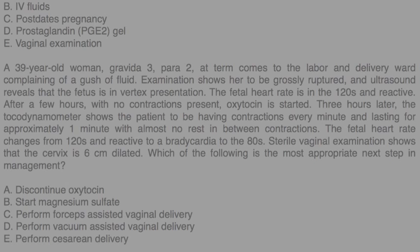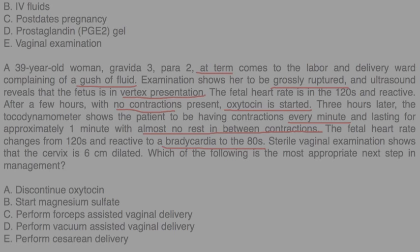A 39-year-old woman, gravida 3 para 2, at term, comes to the labor and delivery ward complaining of a gush of fluid. Examination shows her to be grossly ruptured, and ultrasound reveals the fetus is in vertex presentation. Fetal heart rate is in the 120s and reactive. After a few hours with no contractions, oxytocin is started. Three hours later, the tocodynamometer shows contractions every minute lasting approximately one minute with almost no rest in between. The fetal heart rate changes from the 120s to a bradycardia in the 80s. Sterile vaginal exam shows the cervix to be 6 centimeters dilated. Which of the following is the most appropriate next step in management?